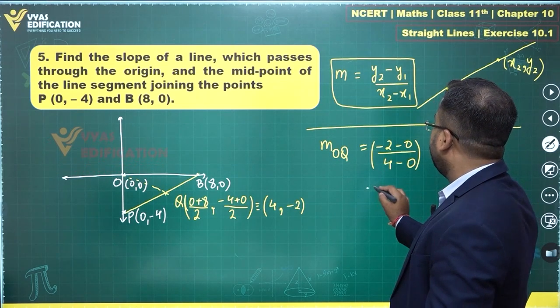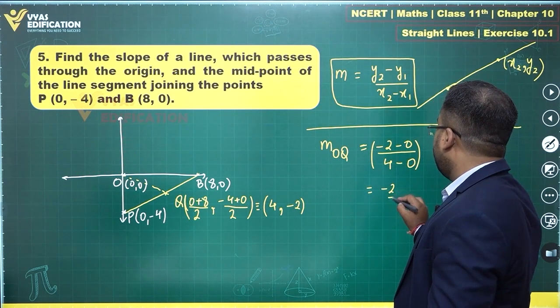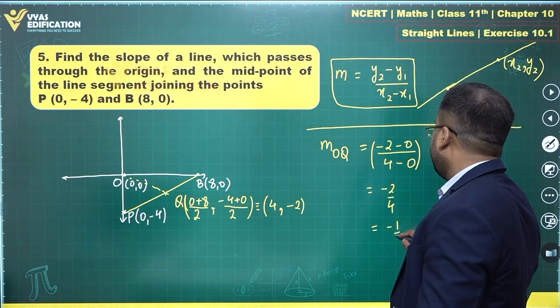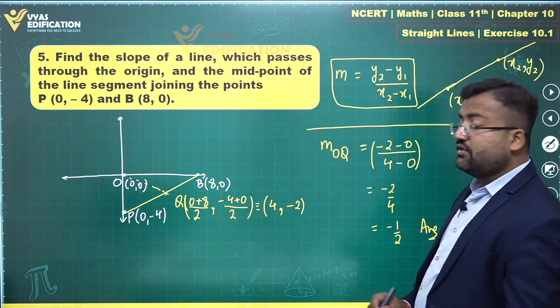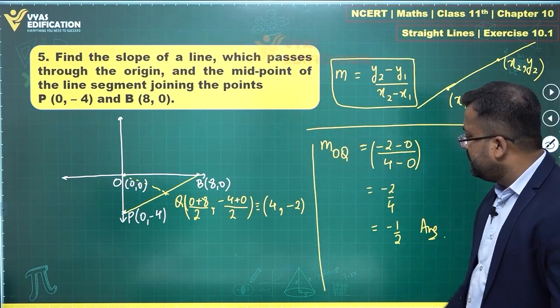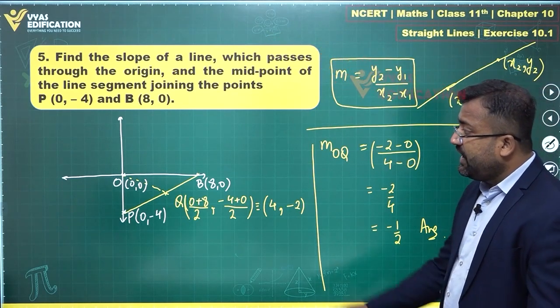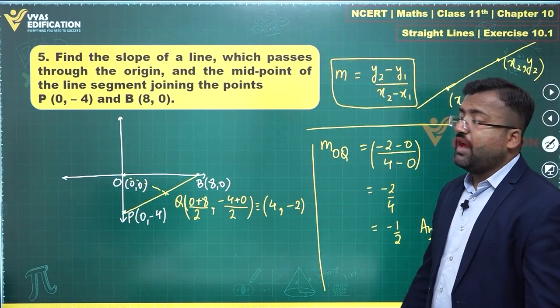This is what you are getting. This is minus two upon four which is minus one by two, and yes that is the answer for this question. That is the final solution. You were asked the slope and you found the slope in this manner.